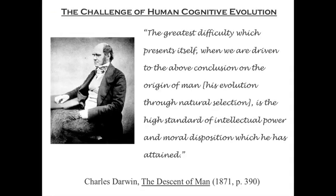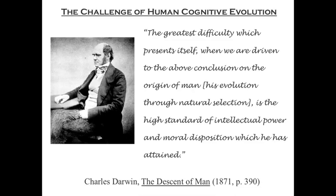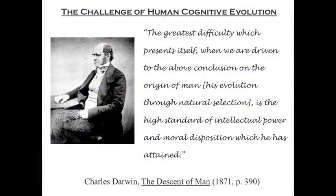So the challenge of human cognitive evolution: Darwin really saw thinking about human cognitive evolution as one of the greatest challenges for his theory of evolution. In The Descent of Man, which he wrote in 1871 — 12 years after The Origin of Species — he addresses what he saw as the greatest difficulty for his theory. He writes: 'The greatest difficulty which presents itself when we are driven to the above conclusion on the origin of man, his evolution through natural selection, is the high standard of intellectual power and moral disposition which he has attained.'